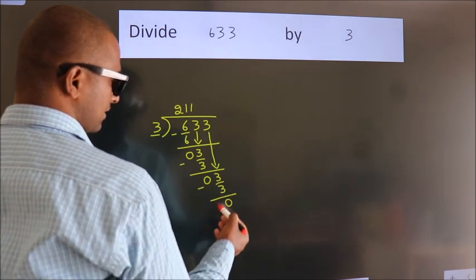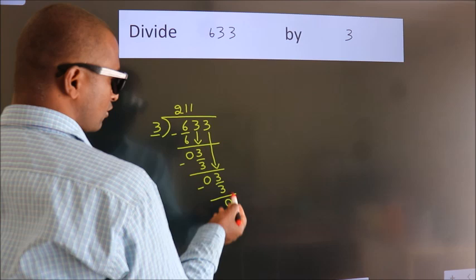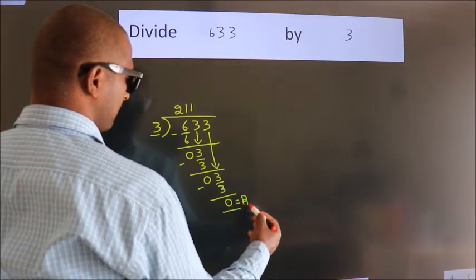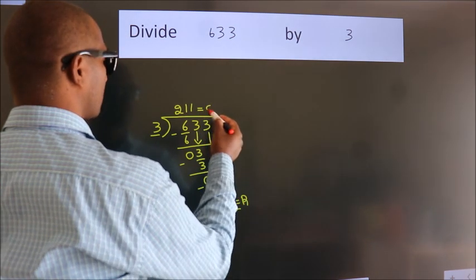After this, no more numbers to bring it down. So we stop here. This is our remainder. This is our quotient.